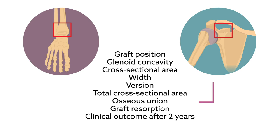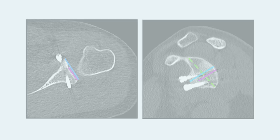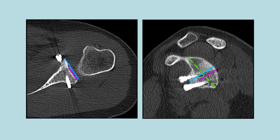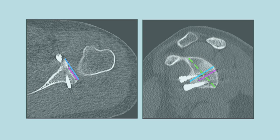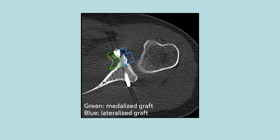For nearly all measures, the distal tibial allografts showed comparable radiological and clinical outcomes to the coracoid autografts. Although there were no significant differences between the procedures for bone union or glenoid measurements, the coracoid autografts were more likely to result in a lateral step formation.